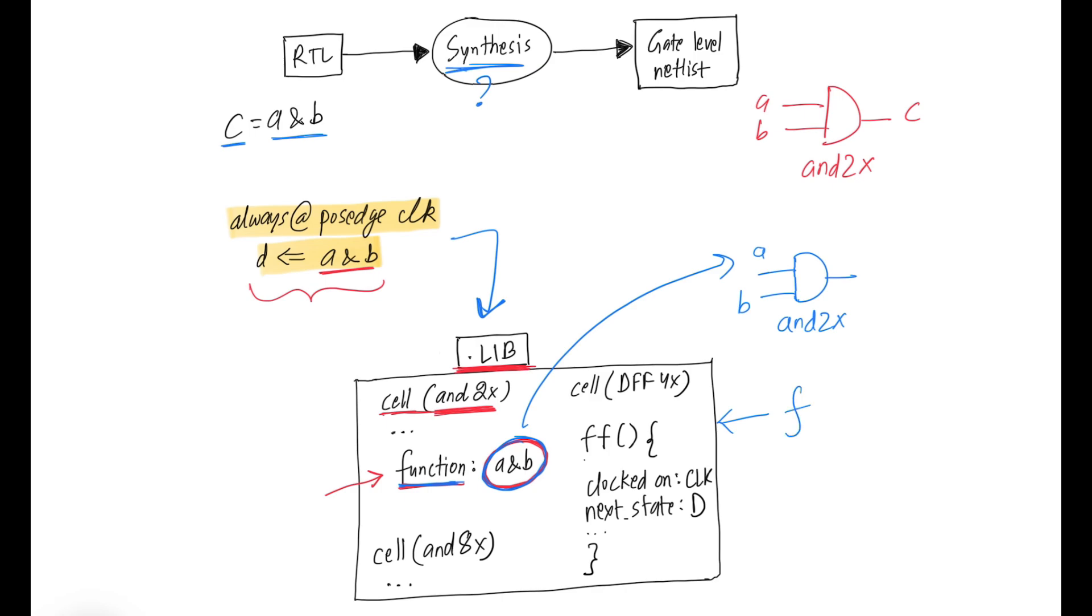Now for any sequential element like a flip-flop, the cell description in the .lib will have a special section which starts with FF. So based on this section, the synthesis tool is able to identify this cell as a flip-flop. And this flop can be picked to implement the RTL description.